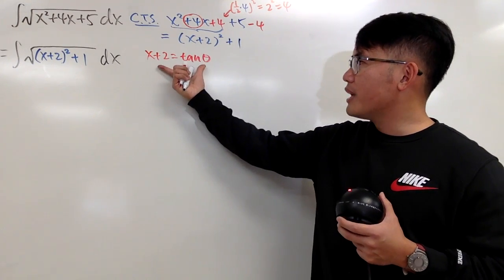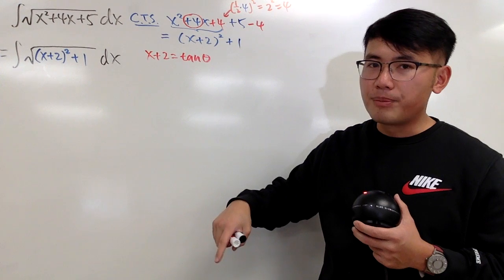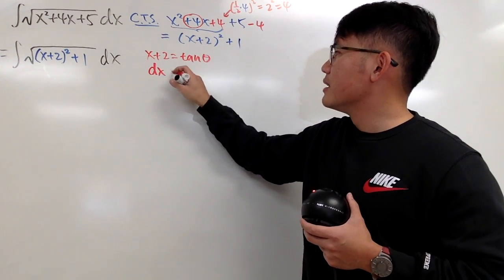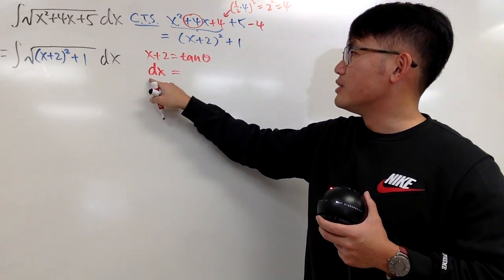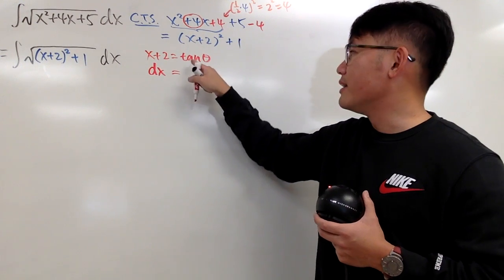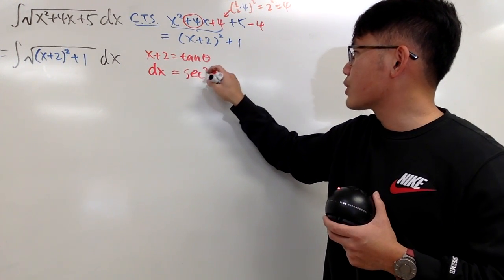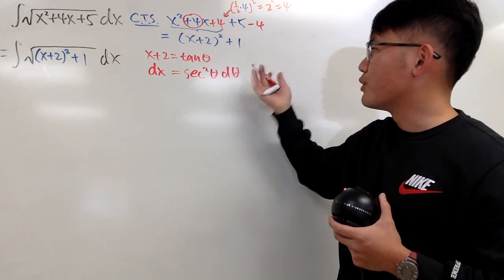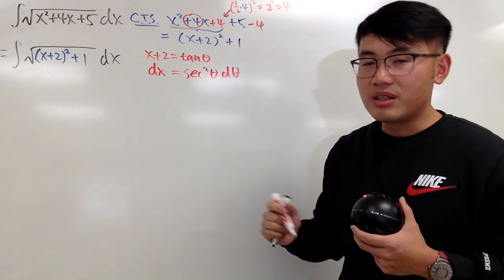Especially if you look at this right here and differentiate both sides, that you get dx, right? Because the derivative of this is just dx. And you just differentiate this, you get secant square theta d theta right away, like this. We can get to the theta world right away.